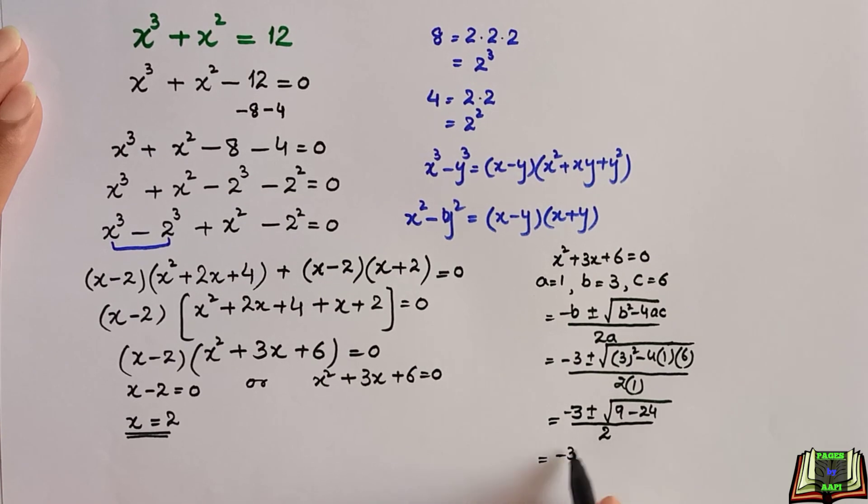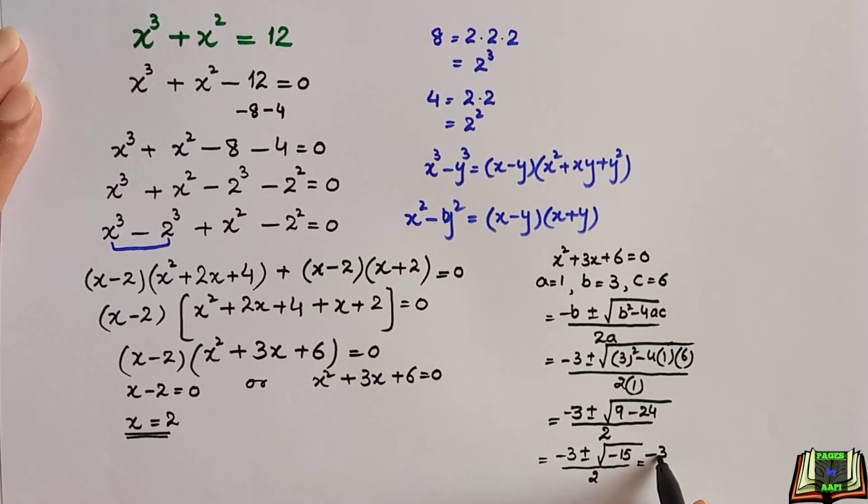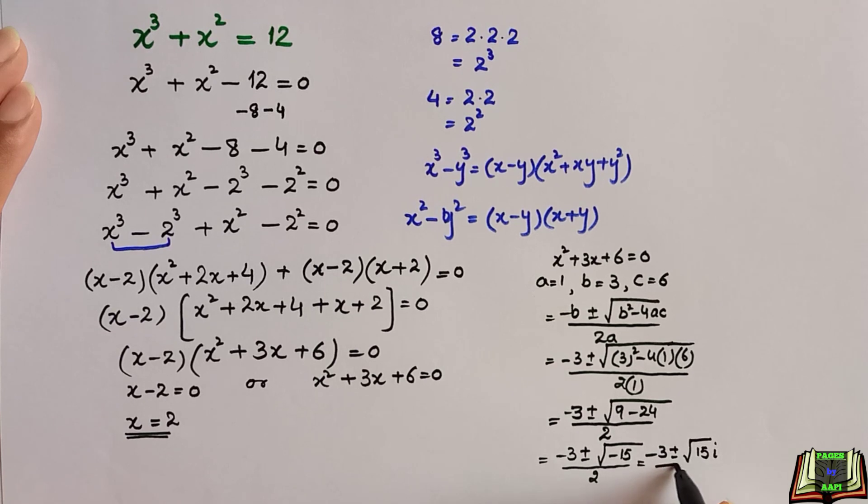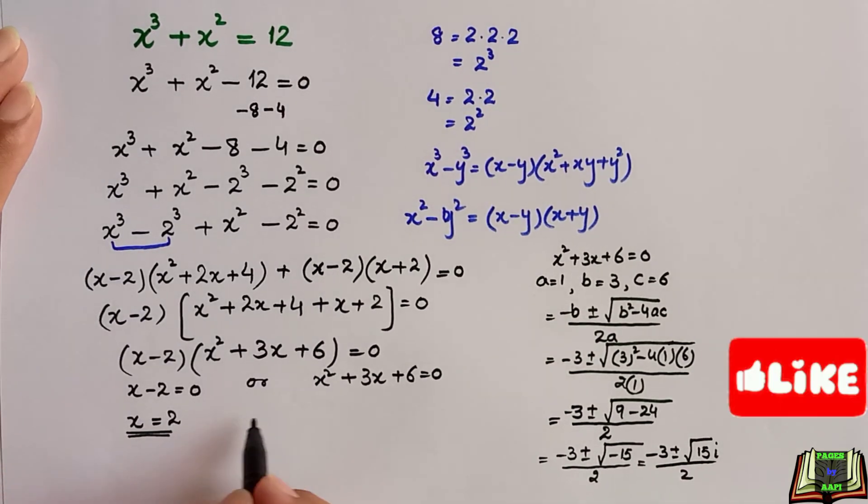Now this is equal to minus 3 plus minus root of minus 15 over 2. Maybe you remember that root of minus 1 is equal to iota, so we can write it as minus 3 plus minus root of positive 15 times iota, all over 2.